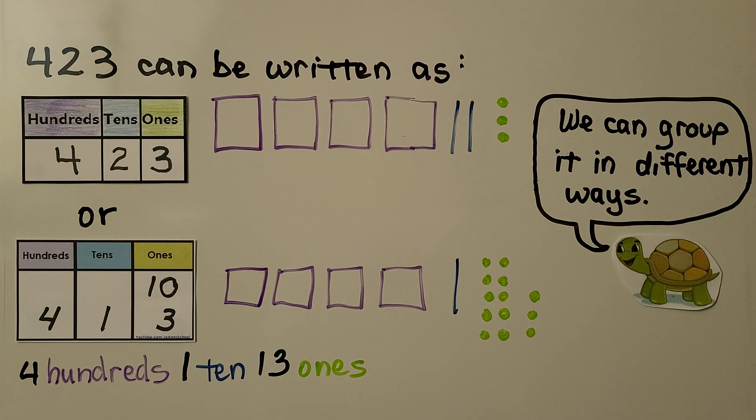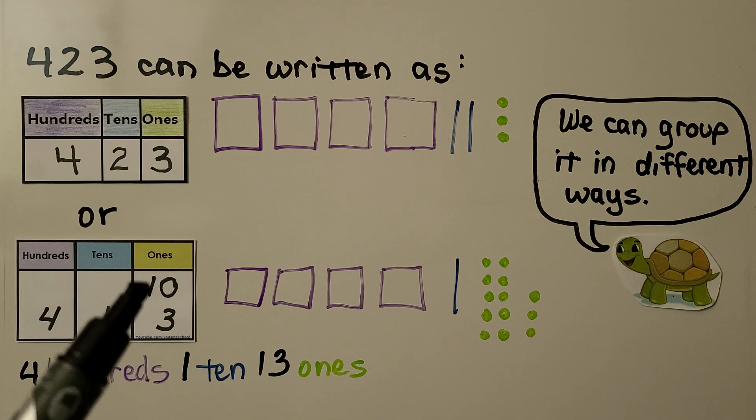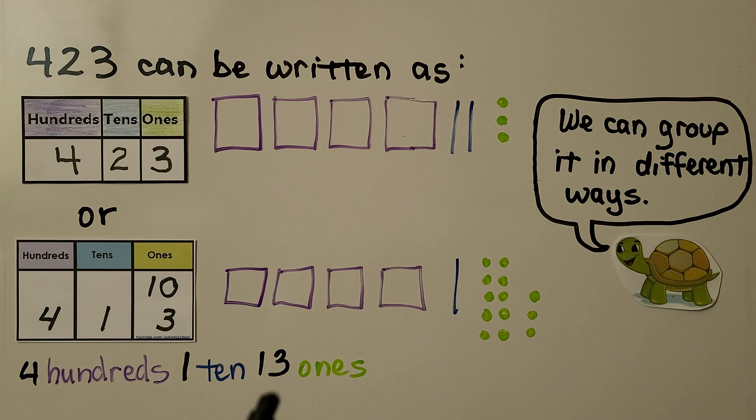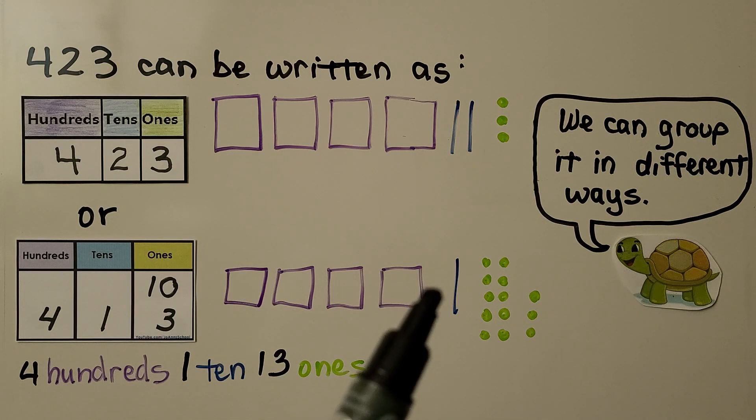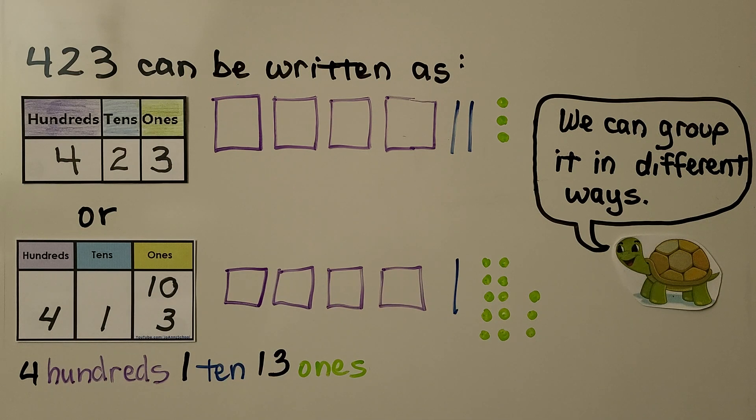Four hundred twenty-three can be written as four hundreds, two tens, three ones. Or it could be written as four hundreds, one ten, thirteen ones. We take one of the tens, we turn it into ten ones. Now we have four hundreds, one ten, thirteen ones. We can group it in different ways.